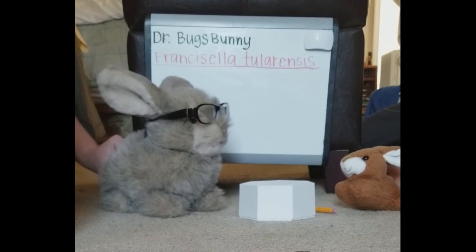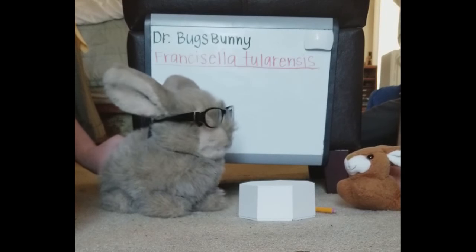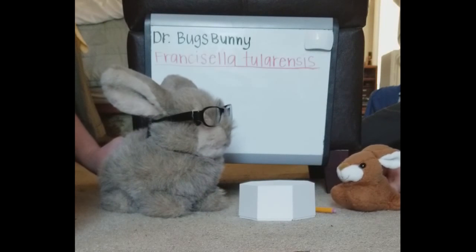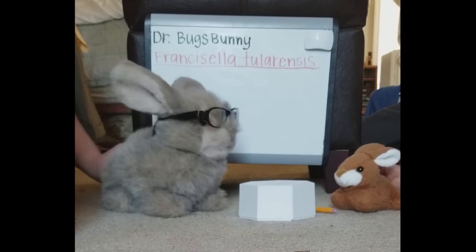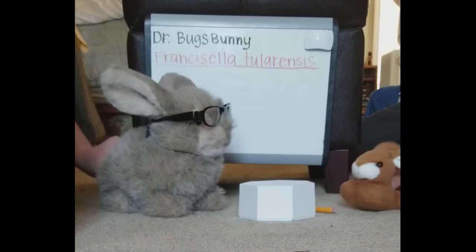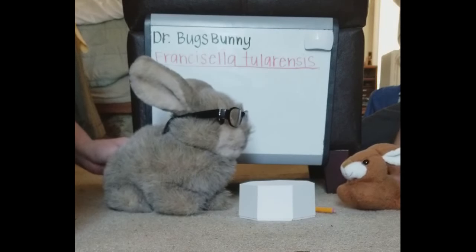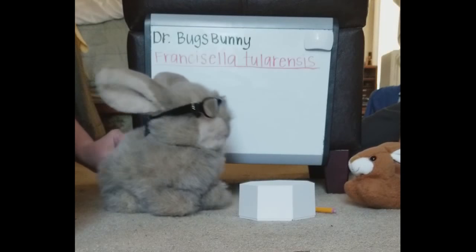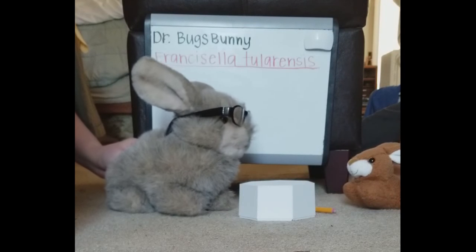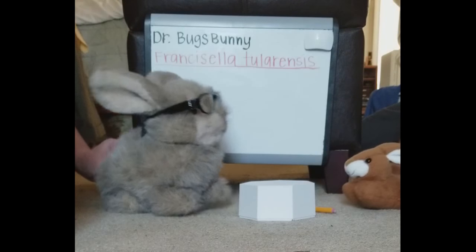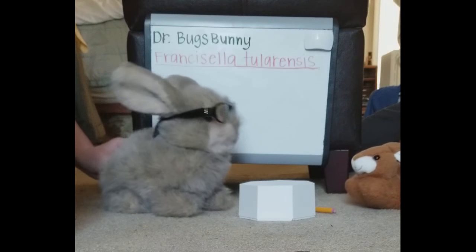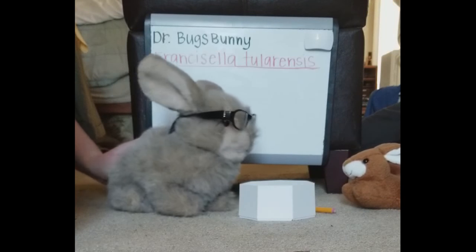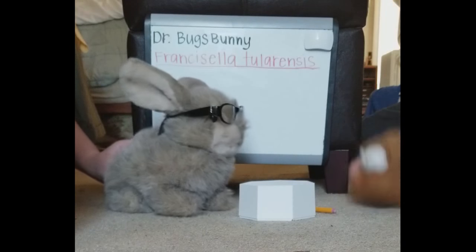So there are four subspecies of this bacteria. There is one strain, Type A, called tularensis, which is highly virulent, and it is most common in North America, and it's going to affect animals and also humans. And then there's a Type B, called holarctica, which is a less virulent type, found in Europe, Asia, and North America. And then there are two other less virulent strains called novicida and mediasiatica.